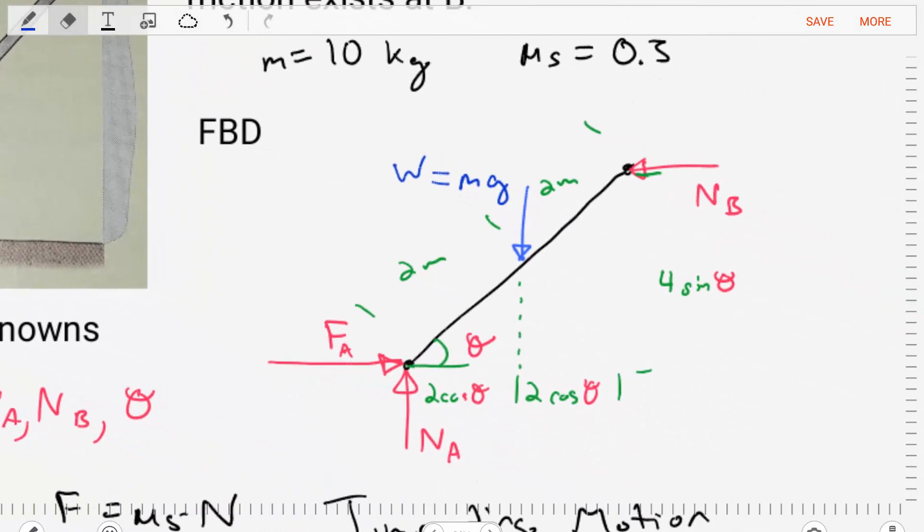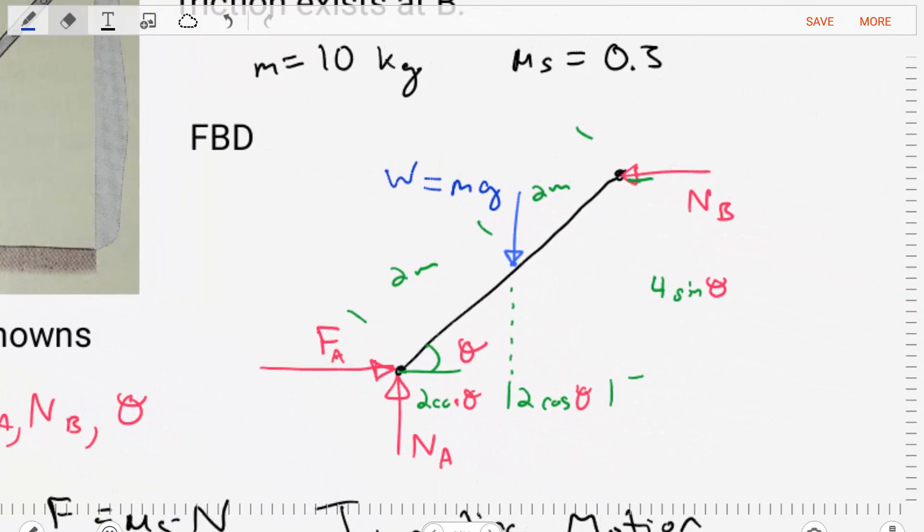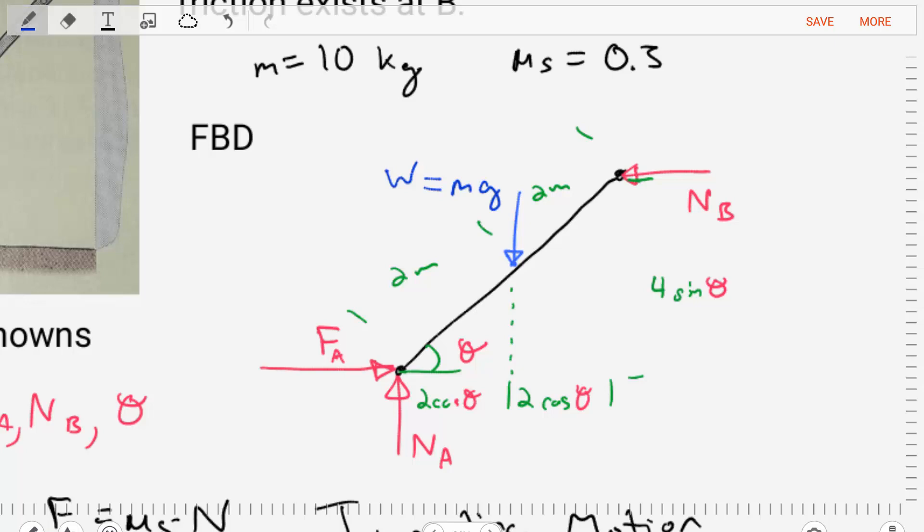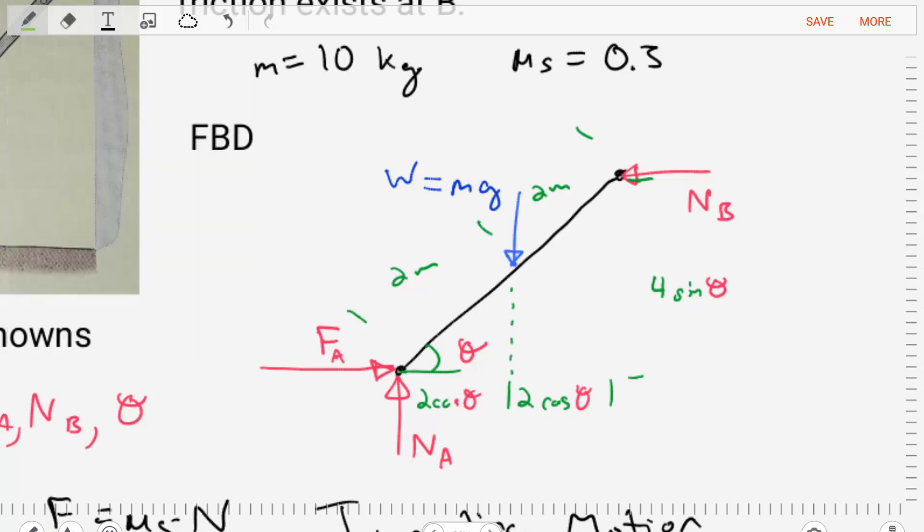For the free body diagram, we can start with just drawing a line and two points for the ladder, and then we can place the dimensional information that we know. Here we're going to split into two pieces, a two-meter part and another two-meter part, where in the middle we apply the weight of the ladder. In the centroid and center of mass, the weight is equal to the mass times gravity. We'll consider that as a known. That's something we can calculate very easily.